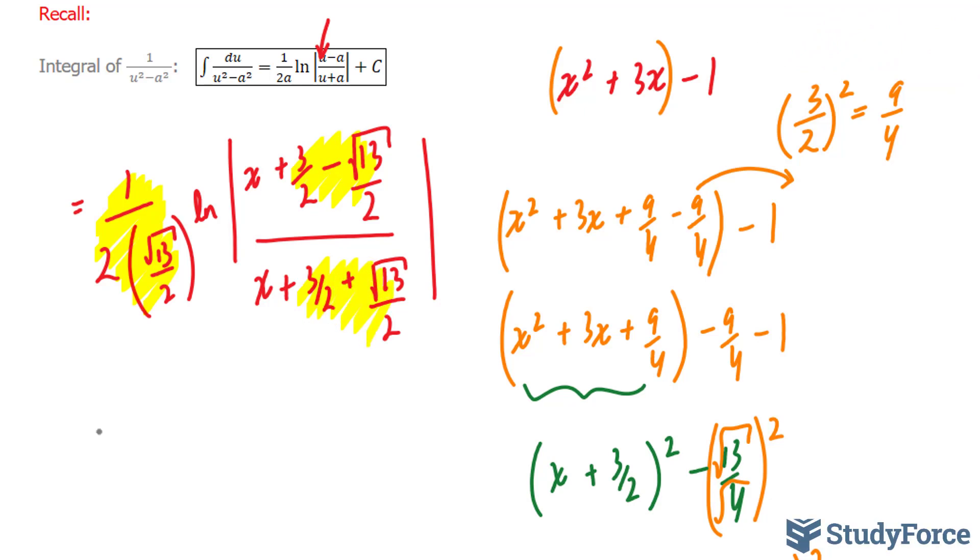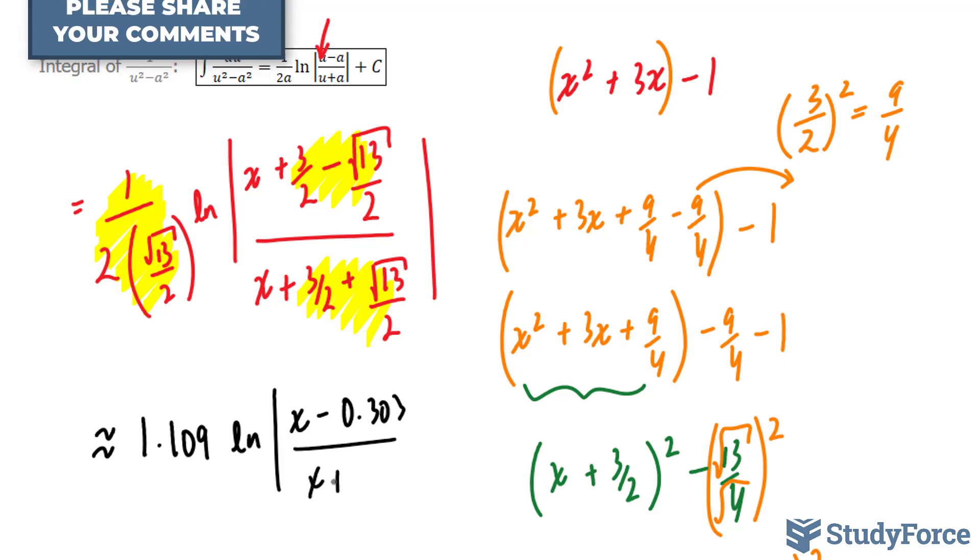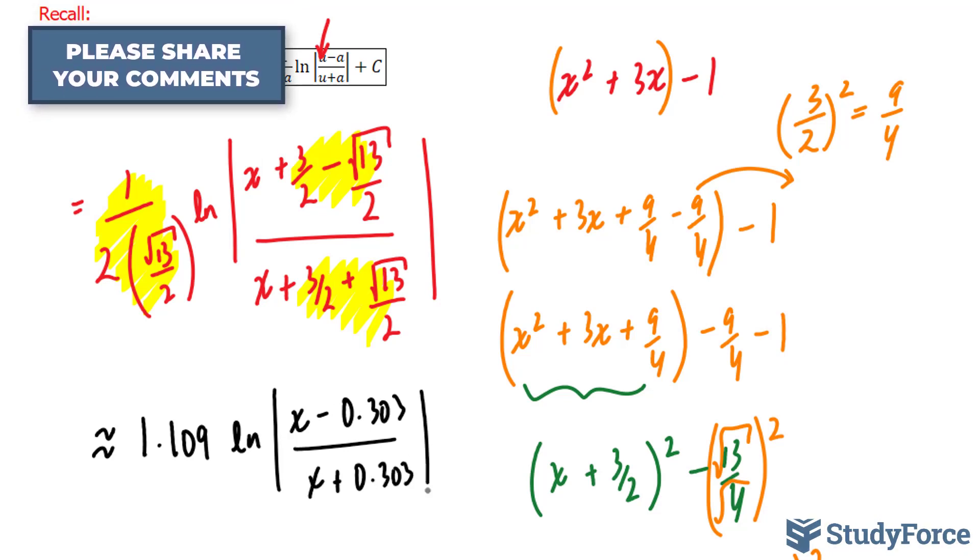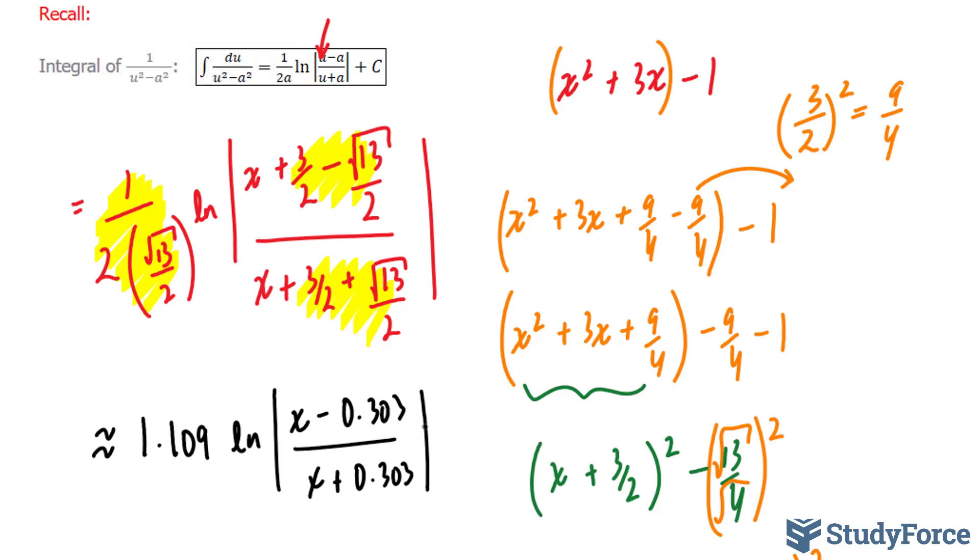you should end up with the final answer of approximately 1.109 ln absolute of x minus 0.303 over x plus 0.303. And I encourage you to do this on your calculator just to make sure that you can come up with these numbers, plus our arbitrary value c. And that's the answer to the question.